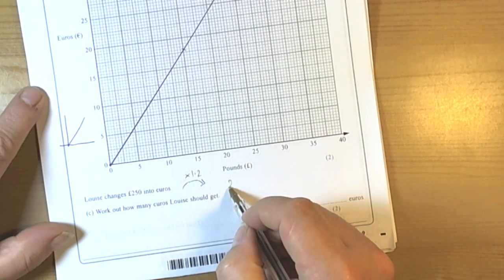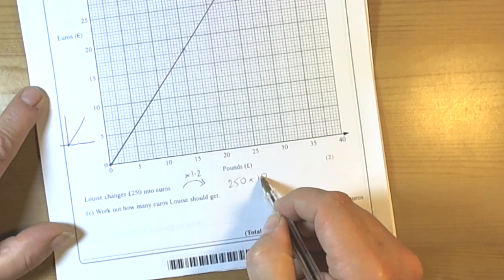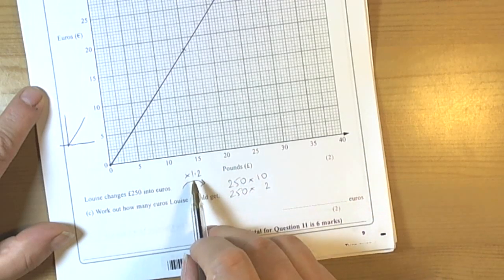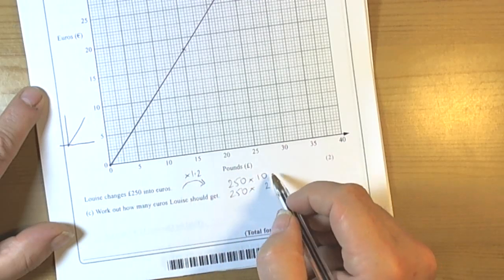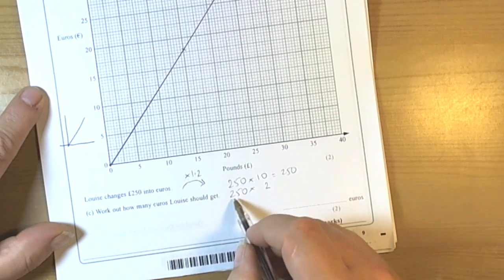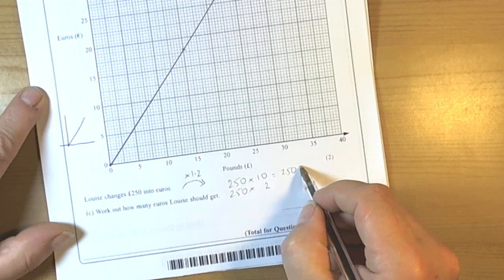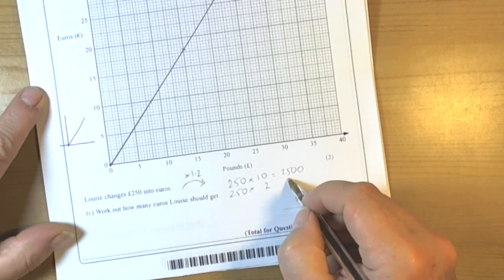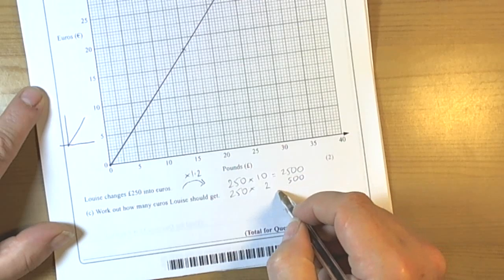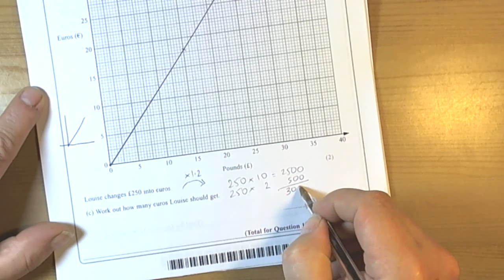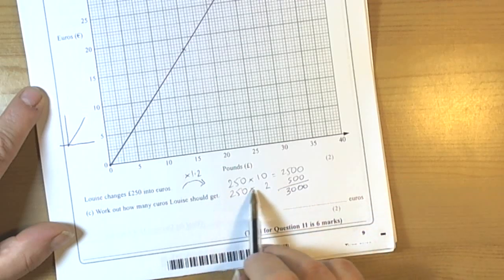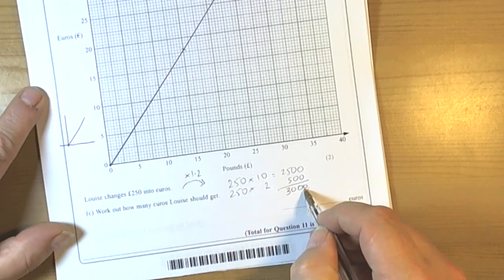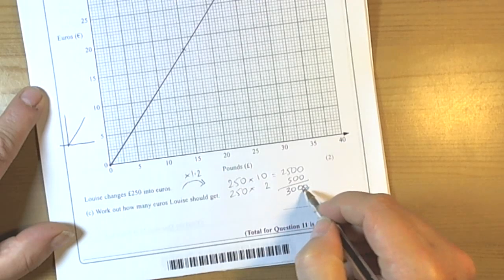So 250 times 10, 250 times 2. So instead of 1.2 I'm doing 12. So 250 times 10 is 2500, and 250 times 2 is 500. We add those together we get 3000. But we multiplied by 12 instead of 1.2, so we come back one place value. So the answer would be 300.